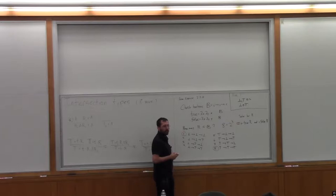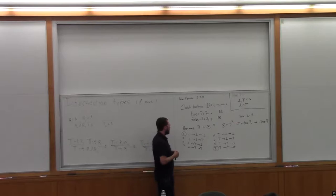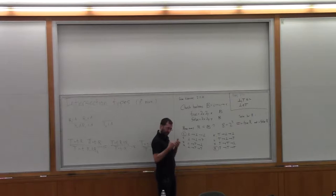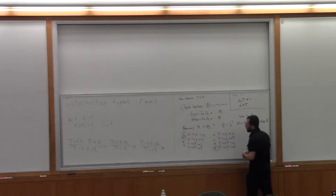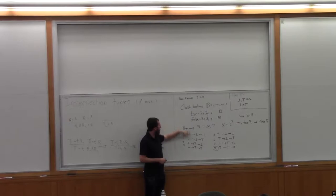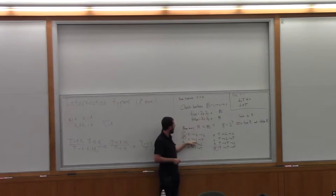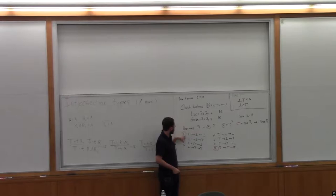Is bottom → bottom → bottom a subtype of bottom → bottom → top? Yes, because bottom is a subtype of top and the rest is equal. So bottom → bottom → top is also a type of both true and false. We can check: assume x has type bottom, y has type bottom, then x has type top by subsumption, so true has this type. The same reasoning works for false.